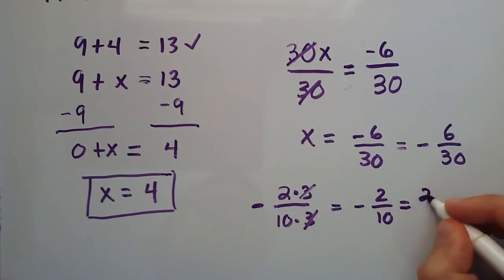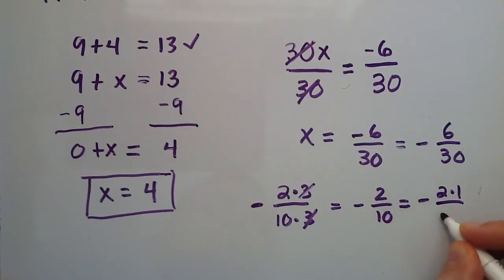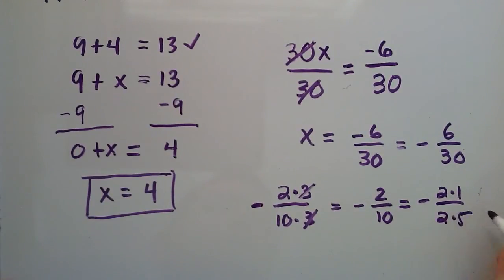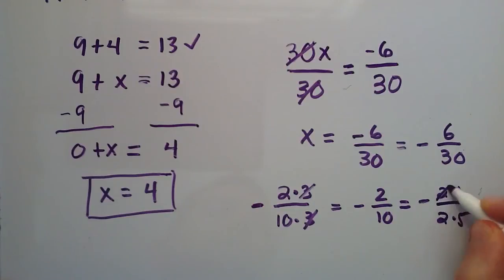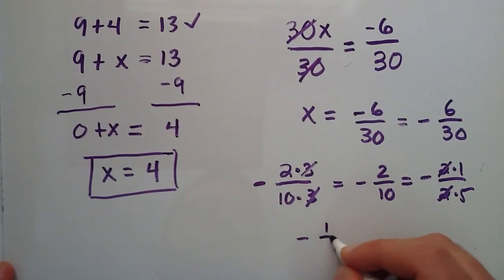And then we can simplify this a little more. 2 is equal to 2 times 1. Don't forget the negative sign. So, 2 times 1 is equal to 2. And 10 is equal to 2 times 5. So, 2 over 2 cancels. This gives us the answer negative 1 over 5.